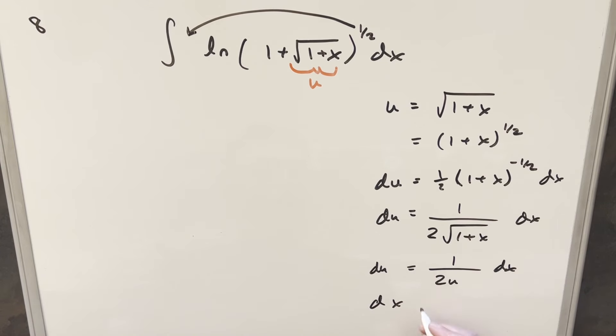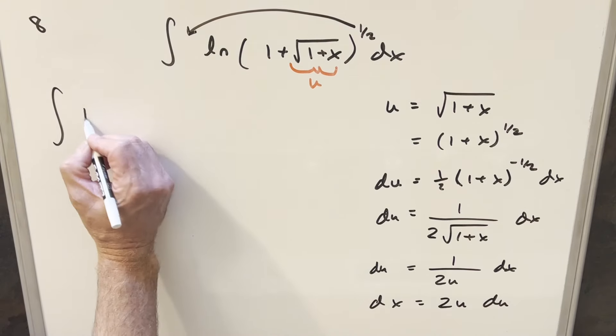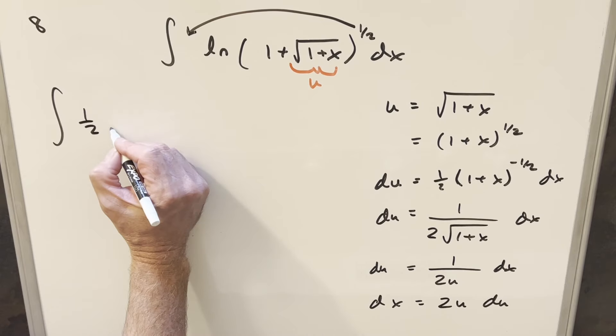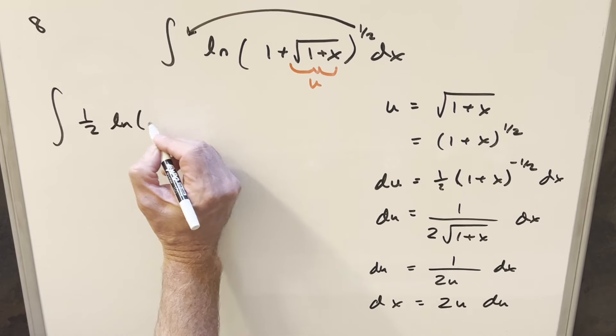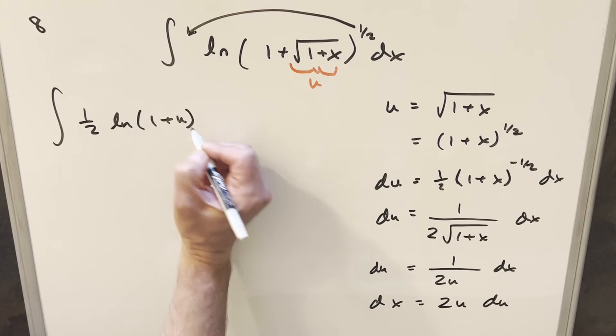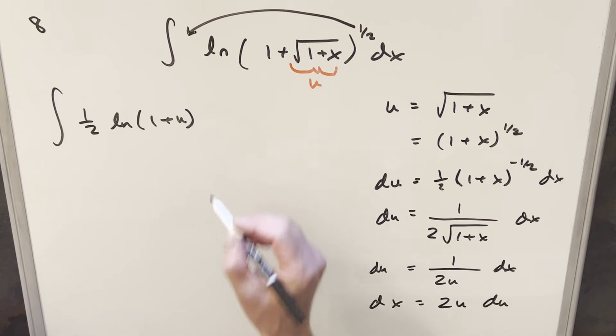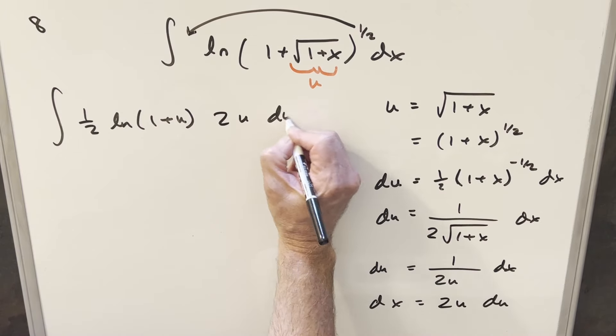So let's rearrange to get a value for dx, multiplying by 2u, we get dx is equal to 2u du. So then we'll go ahead and substitute, now we'll have this 1 half up front here. This stuff is just going to become natural log 1 plus u, then dx is going to be just 2u du.